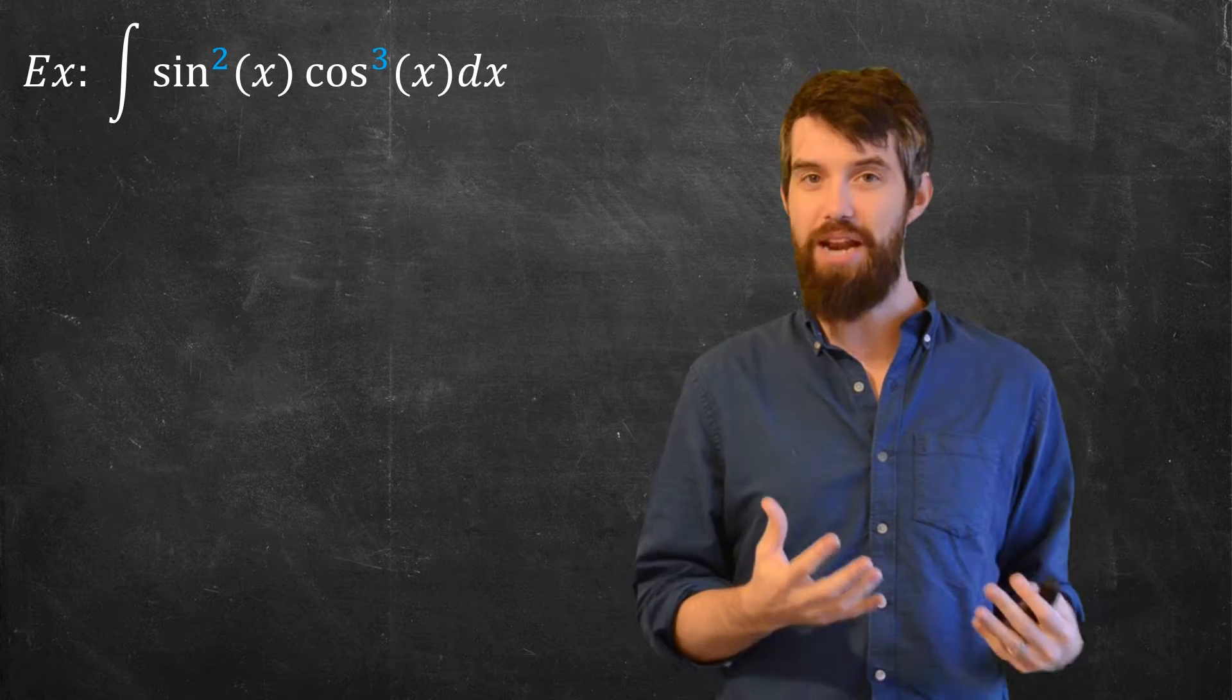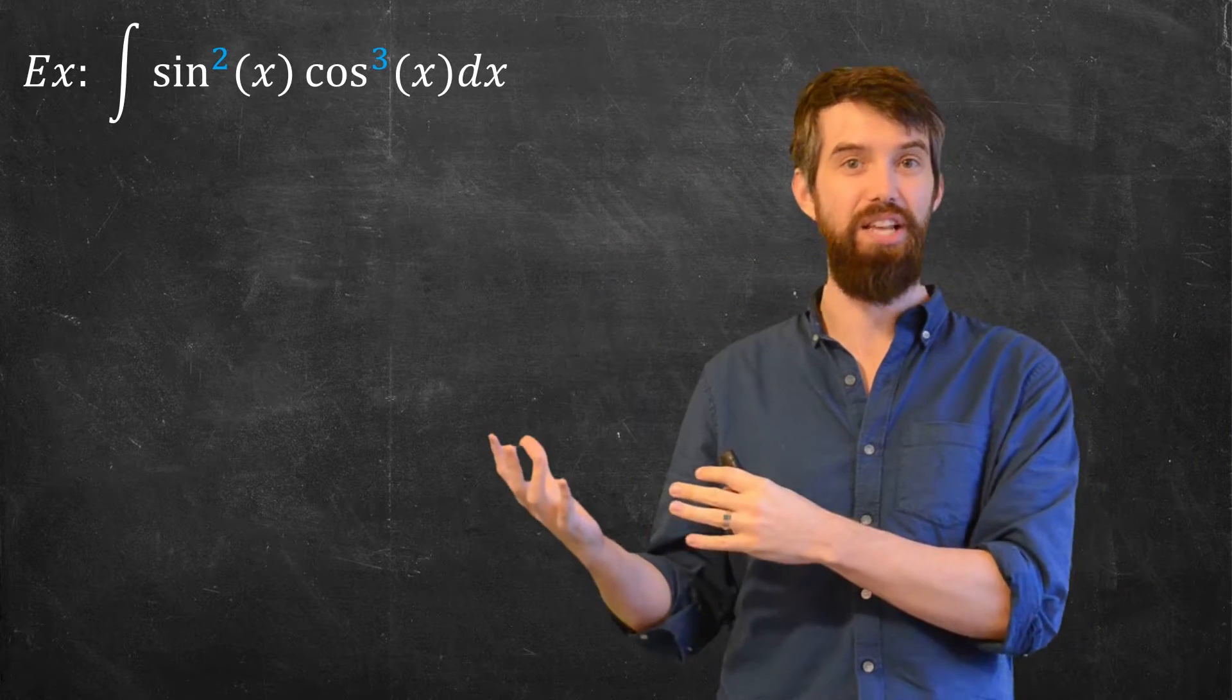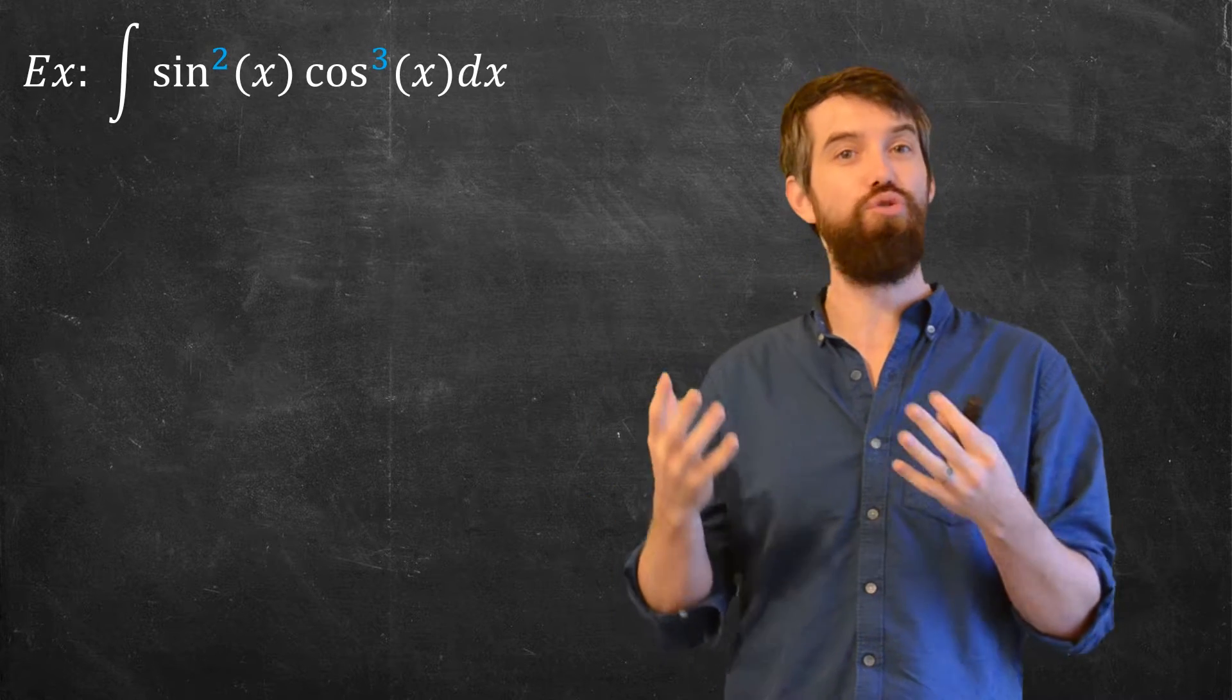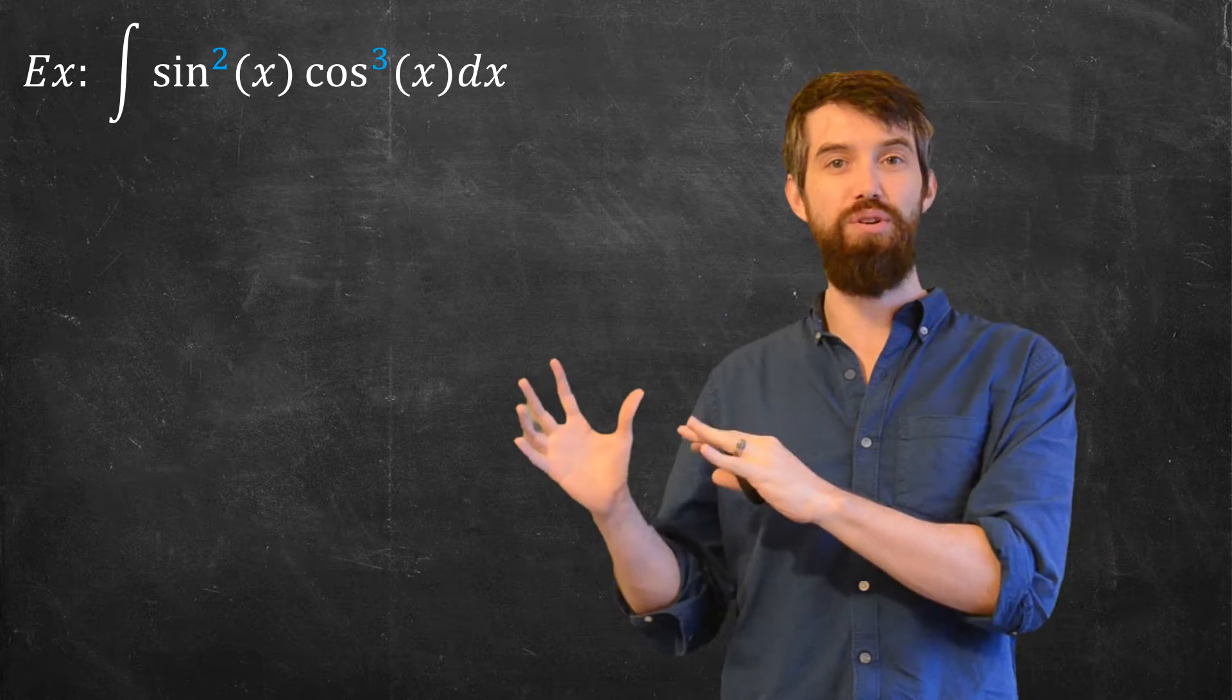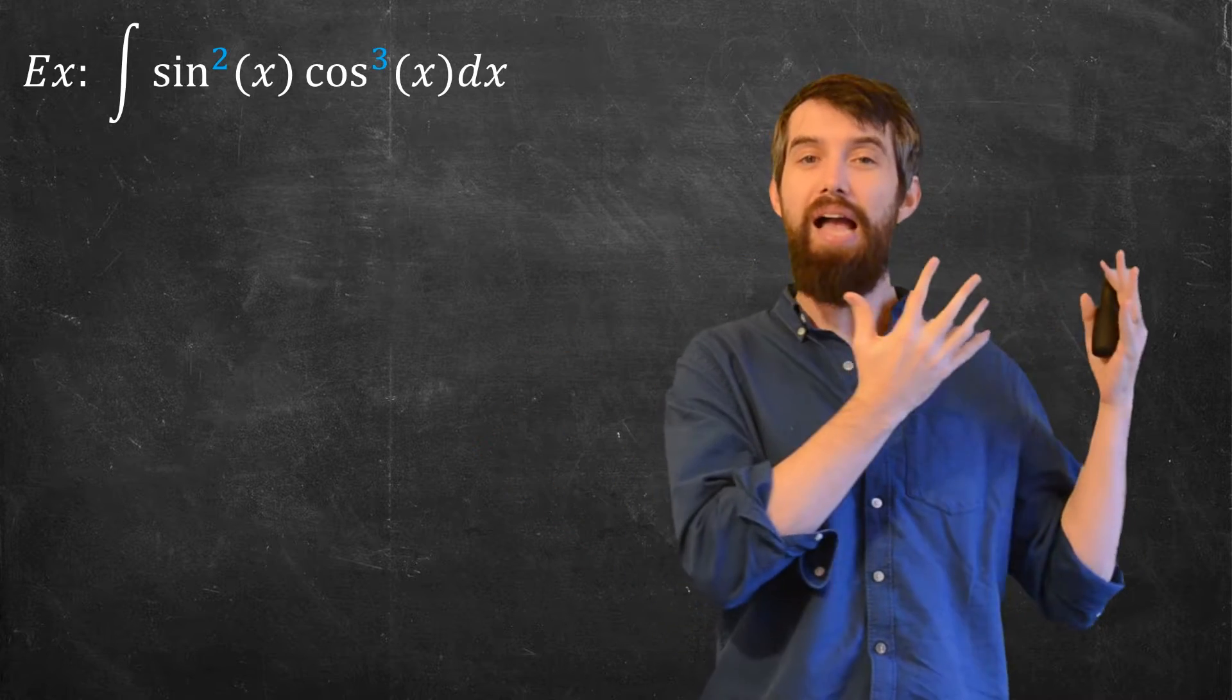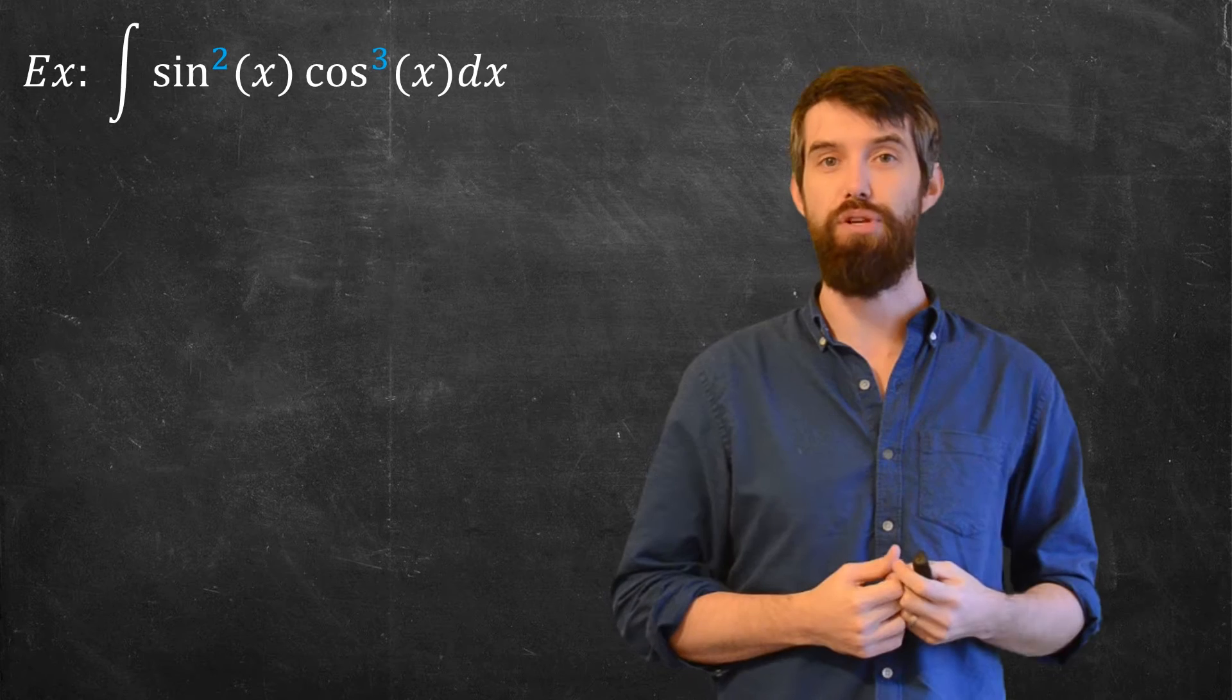The basic strategy is to take all the different trigonometric identities out there in the world and use some of them in special ways to try to take these trigonometric integrals that we don't know how to do, that are hard, and transform them via identities into ones that we can do by just a simple u-substitution, for example.